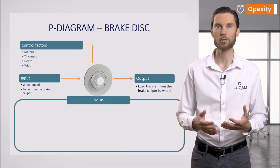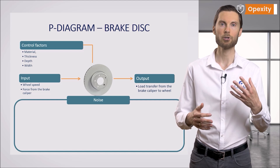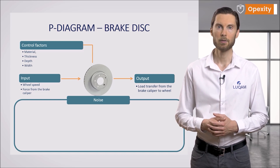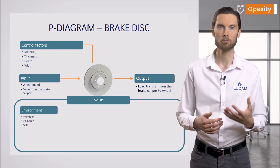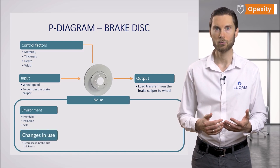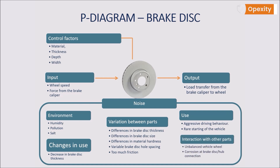Noise factors affect the operation of our object and are beyond our control. Their appearance may cause limitations of certain functions, malfunction, or reduced reliability leading to premature wear and tear. These can include the external environment (humidity, road pollution, salt), changes during use such as gradual reduction of thickness due to abrasion of the disk surface, normal dimensional variation between parts within tolerance, the way of use by the customer such as overheating caused by severe braking, and interaction with other parts such as the effect of an unbalanced wheel on brake disc pulsation.